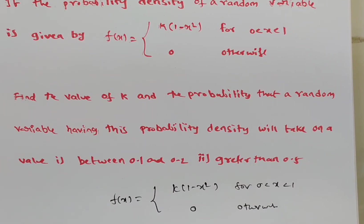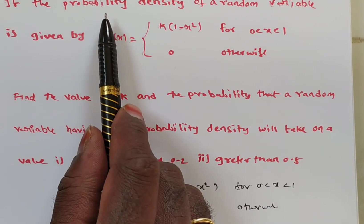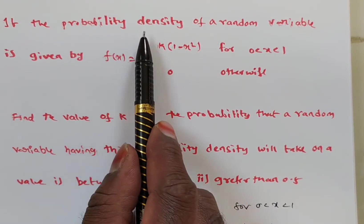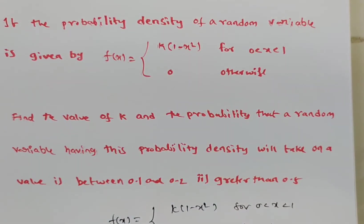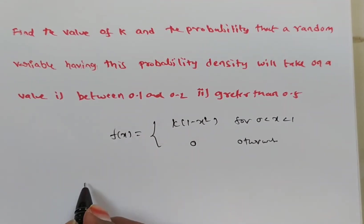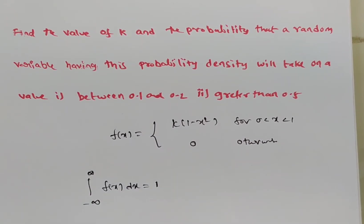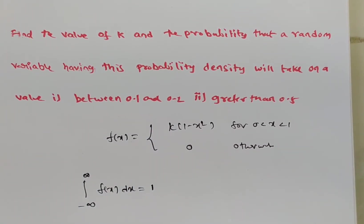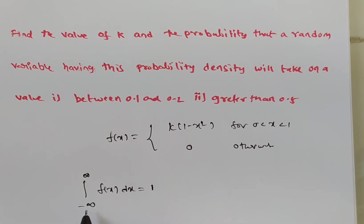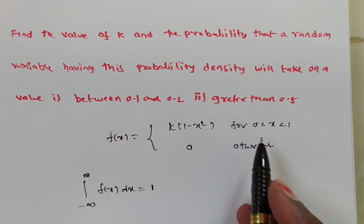To find k, we use the fact that if f(x) is a probability density function, then the integral from minus infinity to infinity of f(x) dx must equal 1. Since they have clearly stated the function is a probability density function, we use this condition to find k.